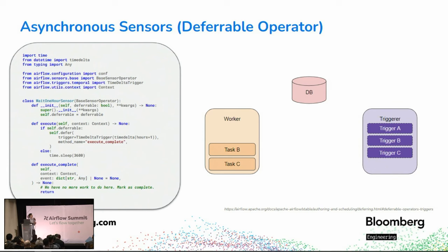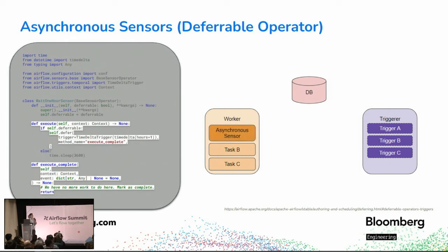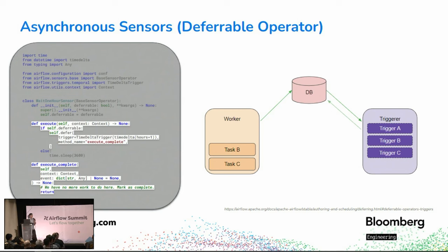Here is my stop-motion diagram of the asynchronous sensor at work. The worker picks up the asynchronous sensor momentarily, only to queue it as a trigger that gets picked up by the triggerer process. The triggerer process handles many different triggers, periodically checking that each trigger's condition has been met. When a condition is met, the trigger is removed and an event is sent back to the worker, which picks it up momentarily only to mark the sensor as successful — demonstrating how little of the worker's capacity an asynchronous sensor incurs.